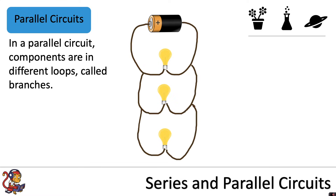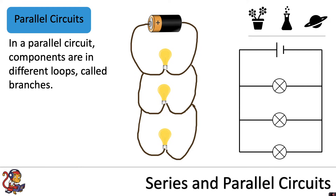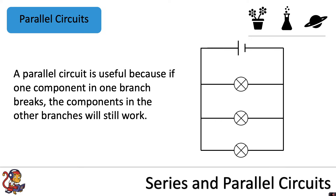If we were to have three lamps in a parallel circuit it would look something like this. A parallel circuit is useful because if one component in one branch breaks, the components in the other branches will still work. For example, if these three lamps were shining brightly and the lamp in the first branch were to break, the lamps in the other two branches would still work.